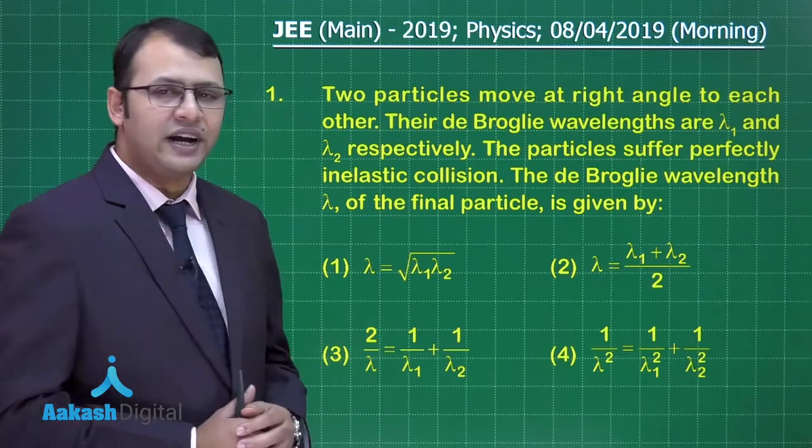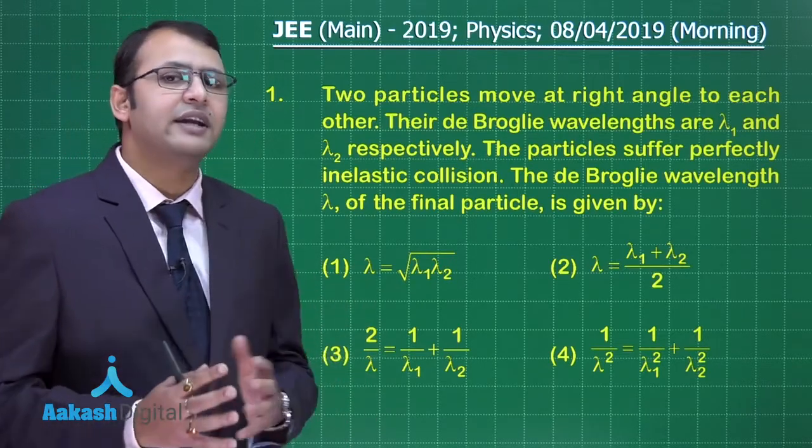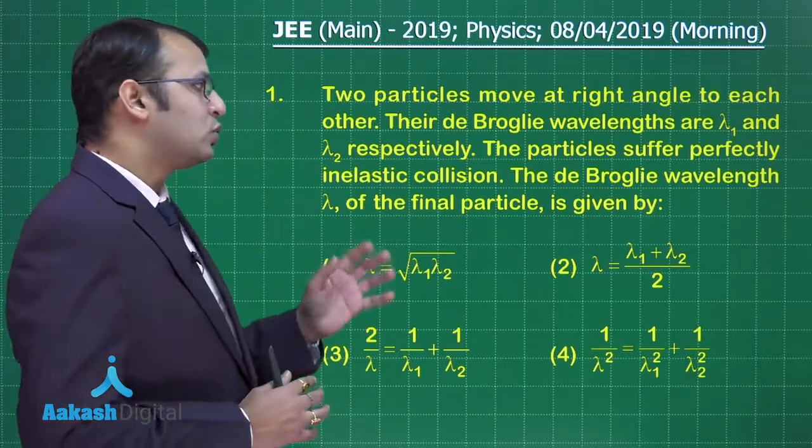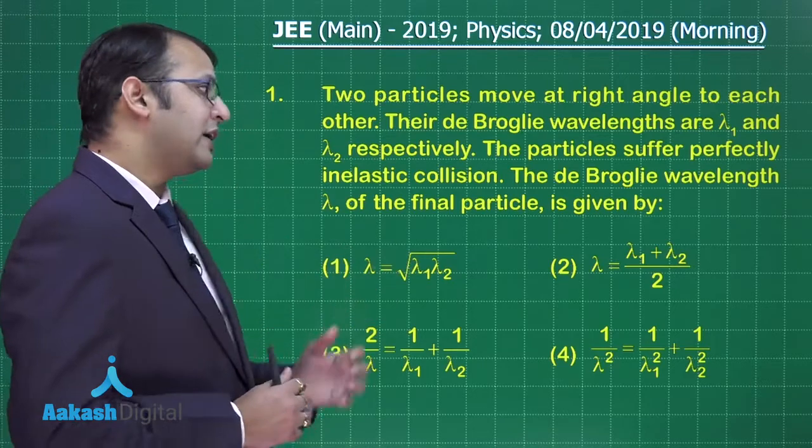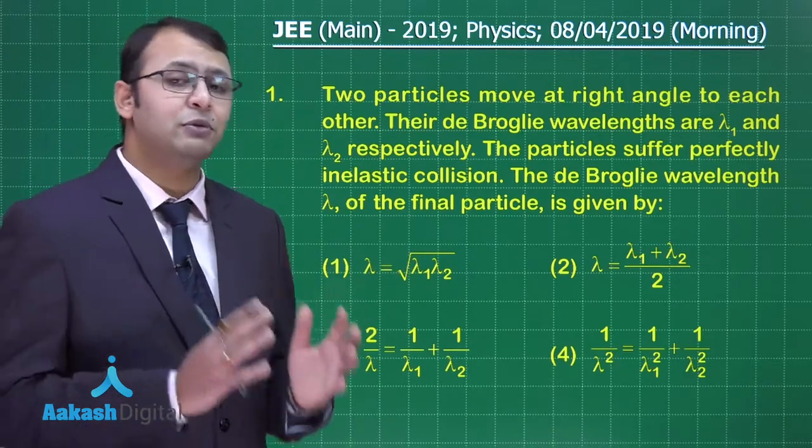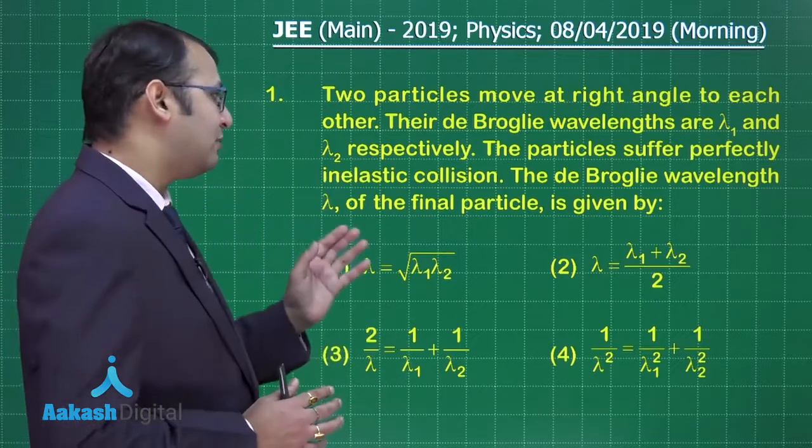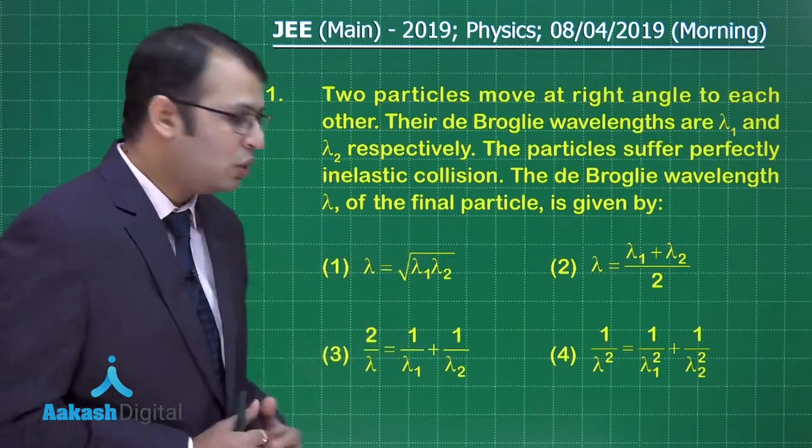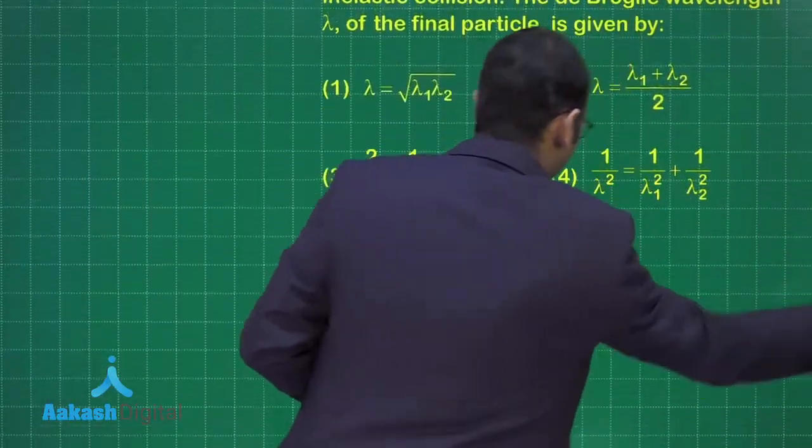Two particles move at right angle to each other. Their de Broglie wavelengths are lambda 1 and lambda 2. According to the question, they suffer perfectly inelastic collision. The final particle formed has de Broglie wavelength lambda. We need to find the relation of lambda with lambda 1 and lambda 2 among the four options.